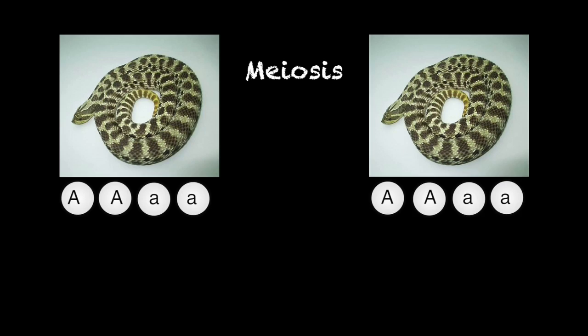But when he makes sperm during meiosis, each sperm will get only one allele. Likewise, with the female, her eggs will be either albino or normal carriers. So if one of the albino sperms swims over and meets an albino egg, fertilization occurs and you end up with an albino baby.